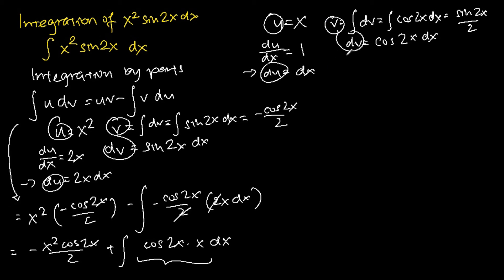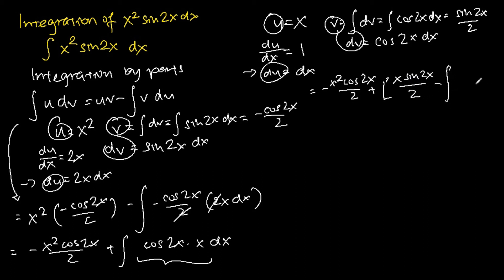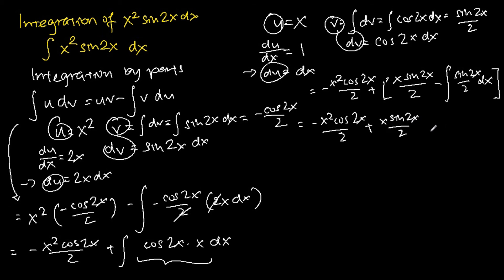Once we know u, v, du, and dv for the second application, we apply the integration by parts formula again to transform the second integral. We get: negative x squared cosine 2x over 2, plus u·v which is x times sine 2x over 2, subtracting the integral of v du which is sine 2x over 2 times dx. Evaluating that final integral gives plus cosine 2x over 4 plus C. Hence the final answer is negative x squared cosine 2x over 2 plus x sine 2x over 2 plus cosine 2x over 4 plus C.